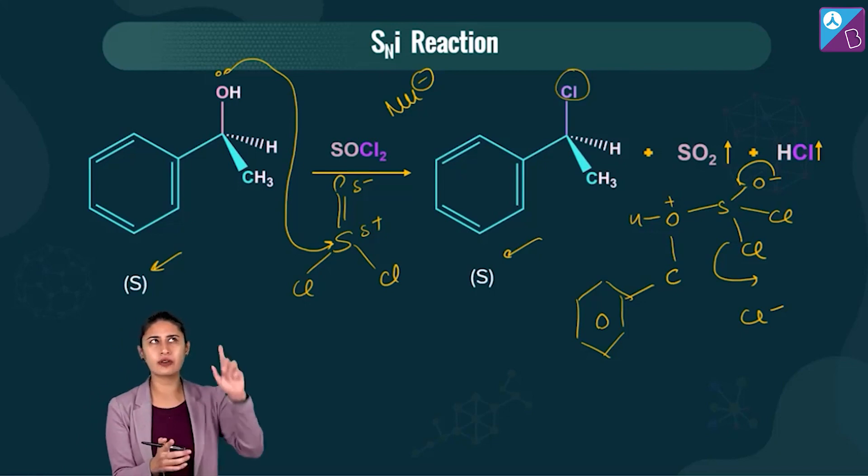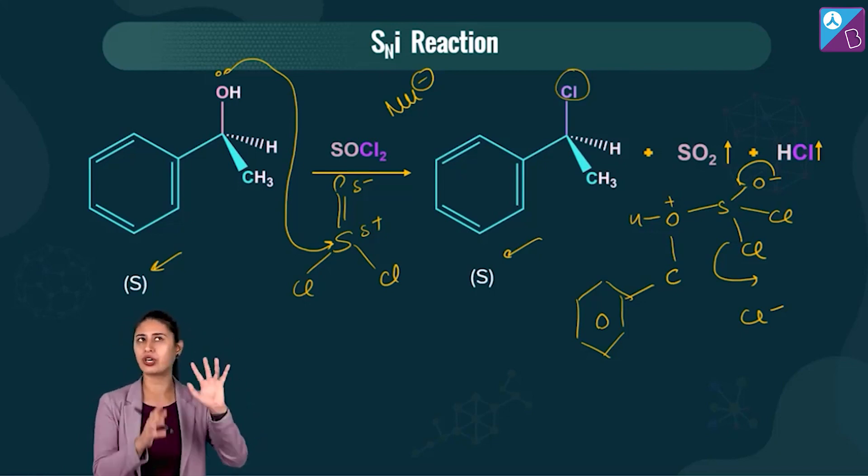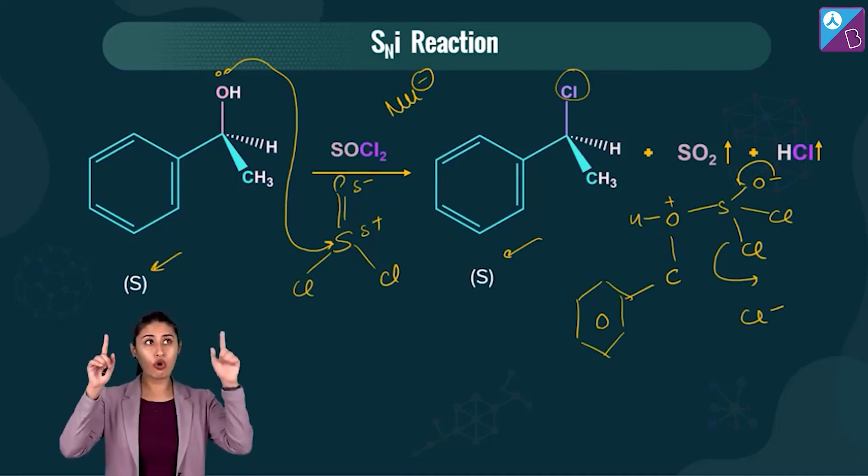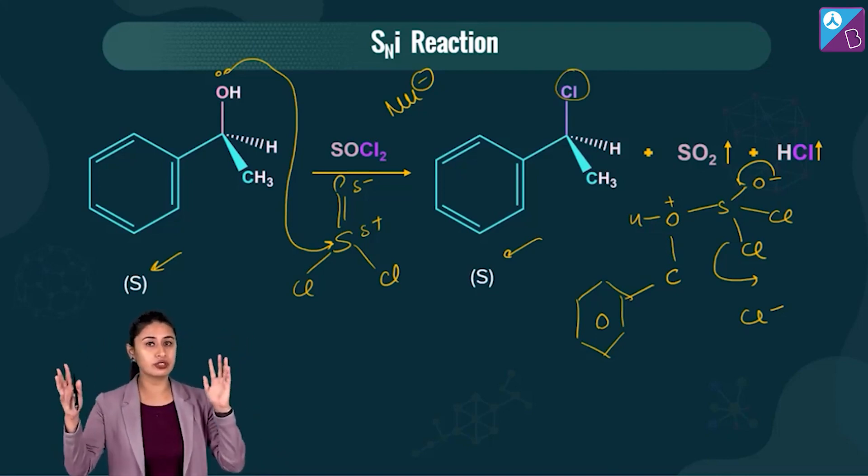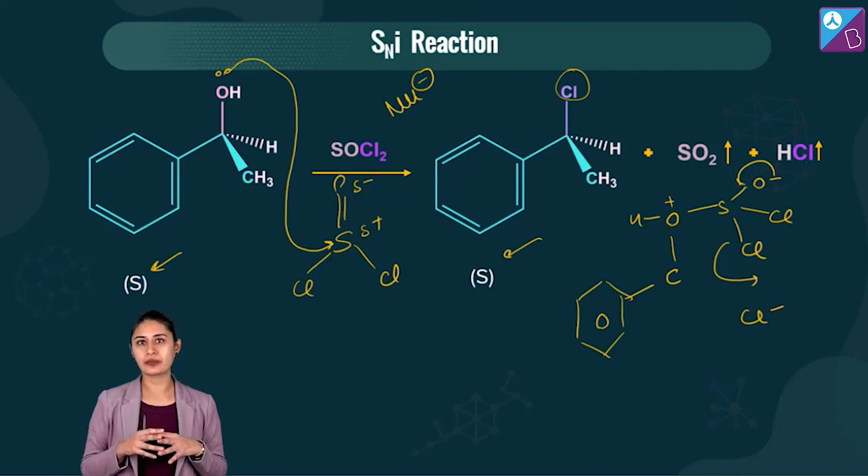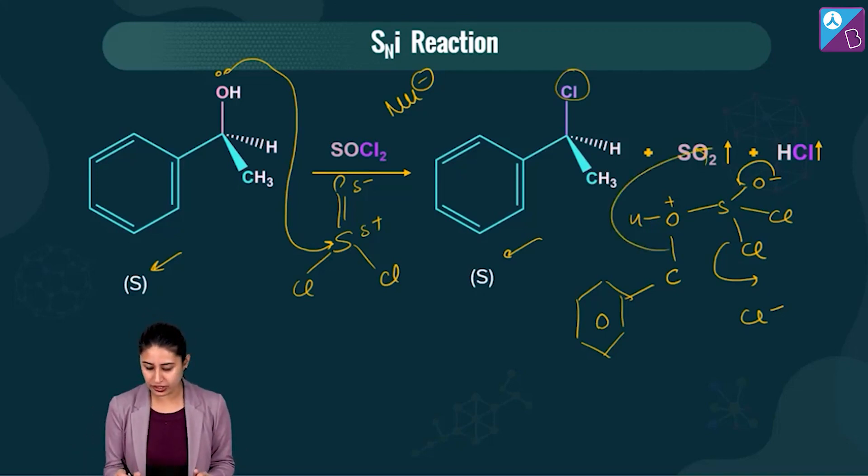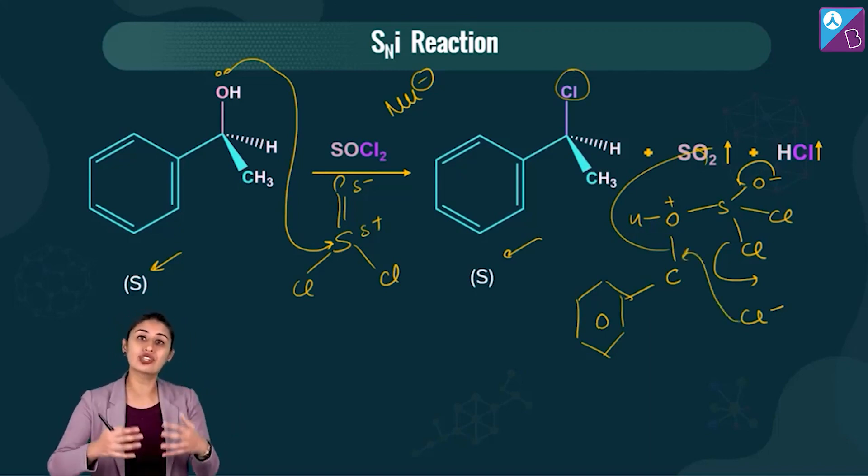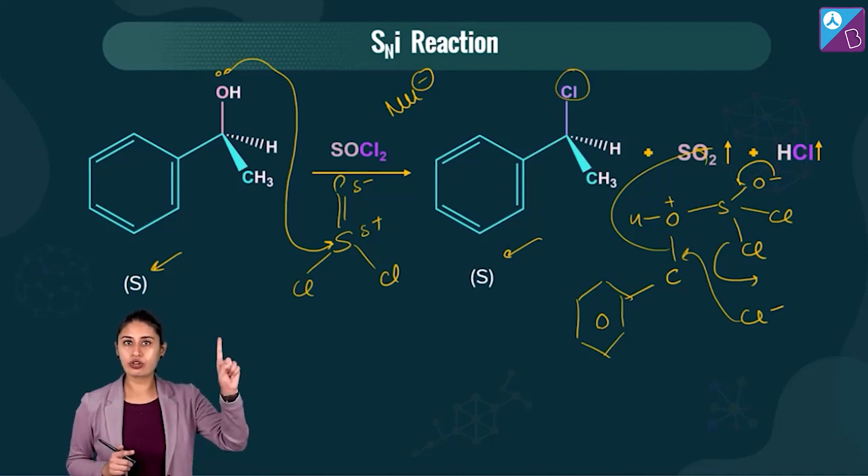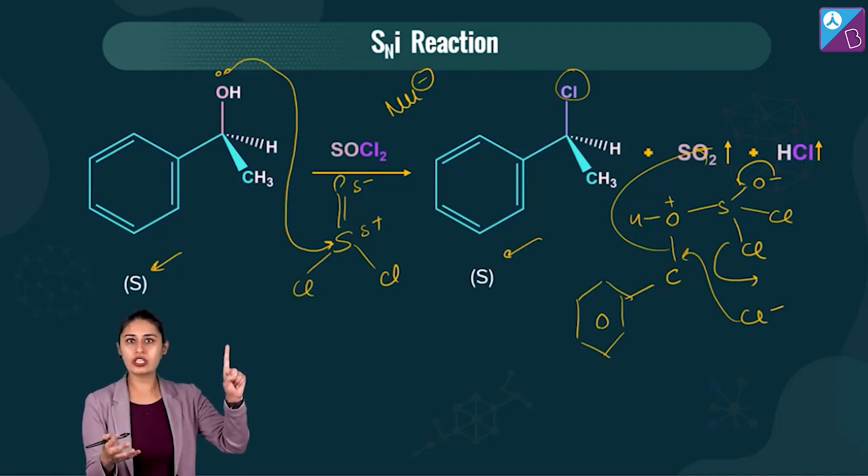If we are starting with the configuration S, you can see the product also has the configuration S. If you know SN1 properly, if you know SN2 properly, partial racemization for SN1, SN2 inversion. Nowhere in SN1 or SN2 have we seen retention so far. Only retention. Here retention is happening. Imagine this whole group leaving and on the same side the nucleophile is attacking. So retention of configuration. Point number one to be noted.